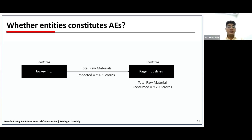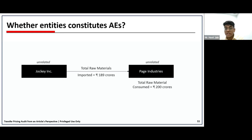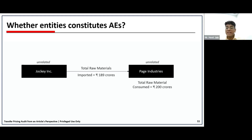The majority answered yes, but it is very important to note that both Section 92A(1) and Section 92A(2) need to be satisfied simultaneously to confirm the relationship. While 90% or more of the raw material has been sourced from Jockey INC — satisfying 92A(2) — in absence of proving that there has been influence on management, capital, or control of Page Industries by Jockey INC, both entities can still be regarded as non-associated enterprises. This comes from the guidance note and memorandum of the Finance Act when Section 92A(2) was introduced.